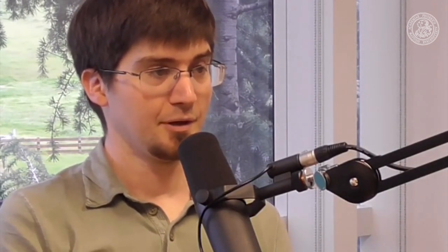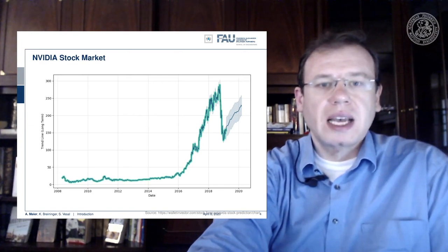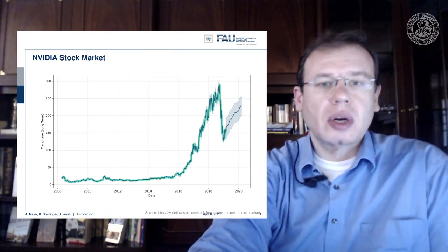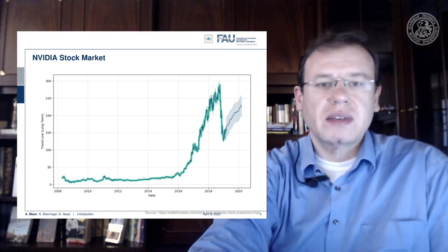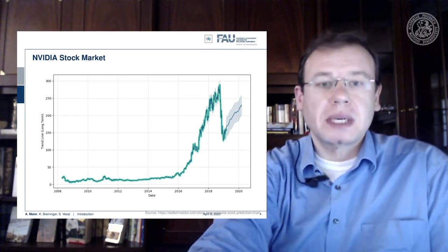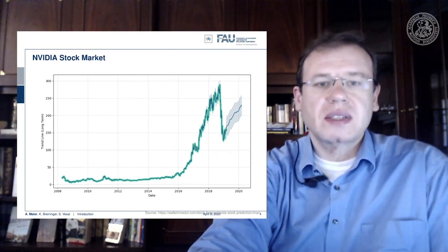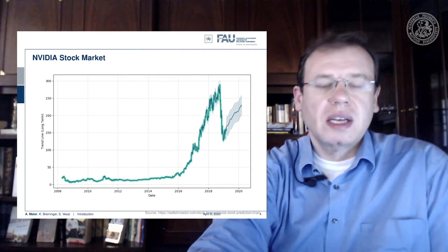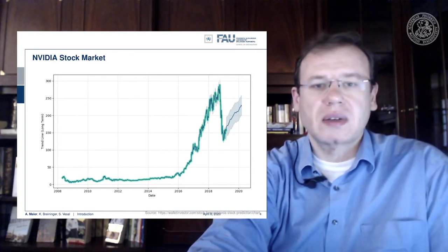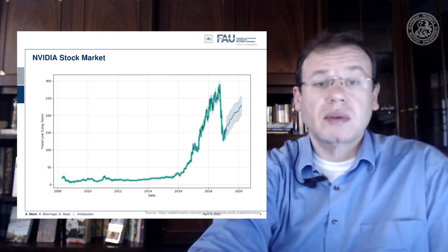I'm optimistic about what can happen just with more computation and more data. You can see there's a considerable dip around 2019, the end of 2018. It's not only deep learning driving Nvidia's market value — there's also Bitcoin mining. The Bitcoin value really decreased in that period and Nvidia's value went down too, so it's partially associated with Bitcoin. But you can see the value is going up again because there's a huge demand for compute power in deep learning.